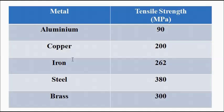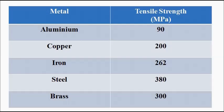The tensile strength of some metals commonly used for engineering applications are given here. We have aluminium, copper, iron, steel, and brass, having values of 90, 200, 262, 380, and 300 respectively. The unit is in megapascal. So that is about tensile strength. The next topic is ductility.